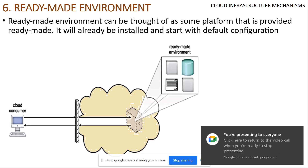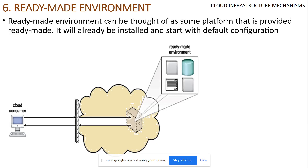A ready-made environment is very useful. For example, for a robotics application, AWS provides RoboMaker — you don't have to install the robotics operating system or configure anything. Without a ready-made environment, setting up locally would take a lot of time resolving installation and configuration issues. The cloud consumer can be serviced better with ready-made environments that include not just the platform but the underlying infrastructure as well.